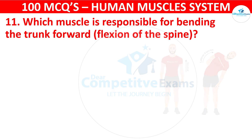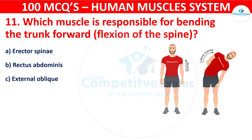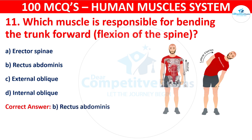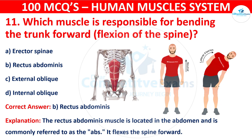Question number eleven: Which muscle is responsible for bending the trunk forward — flexion of the spine? Your options are: Erector spinae, Rectus abdominis, External oblique, or Internal oblique. The correct answer is B, that is rectus abdominis. The rectus abdominis muscle is located in the abdomen and is commonly referred to as the abs. It flexes the spine forward.